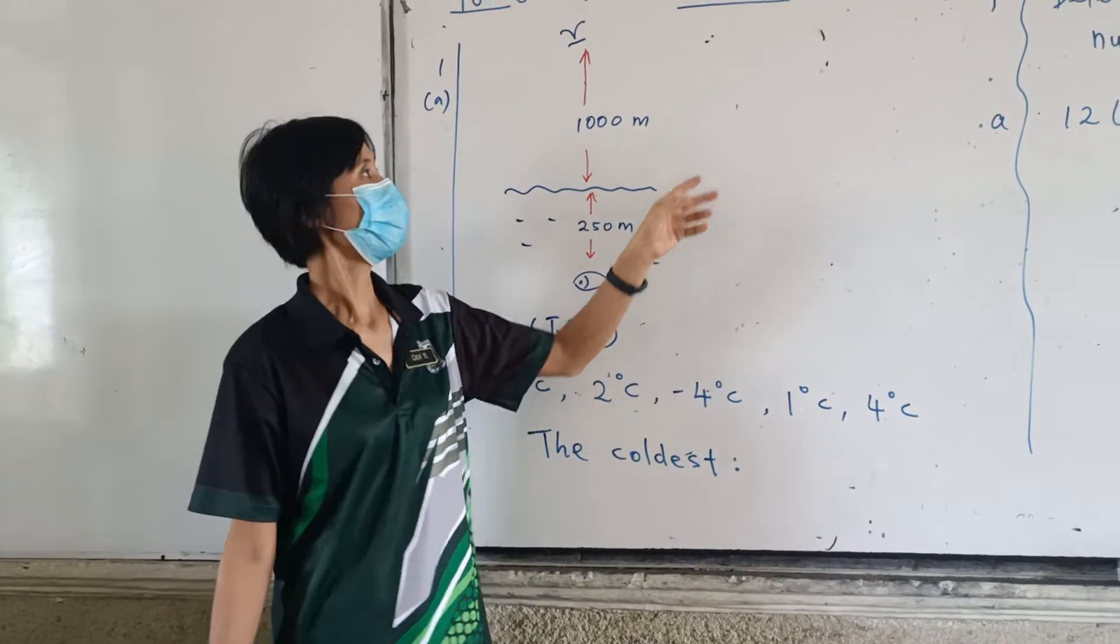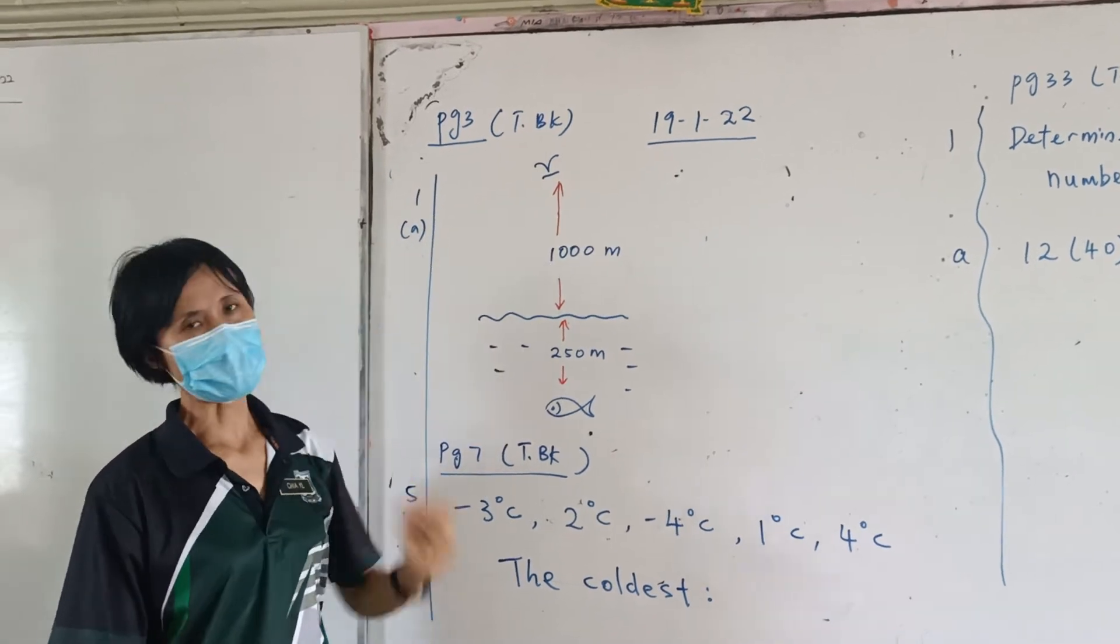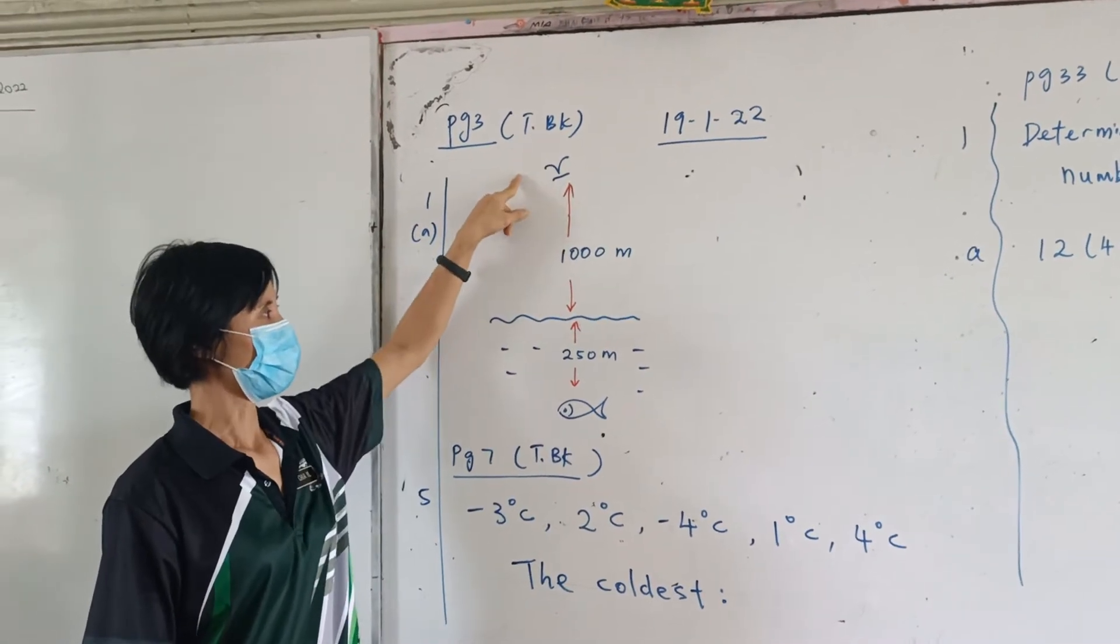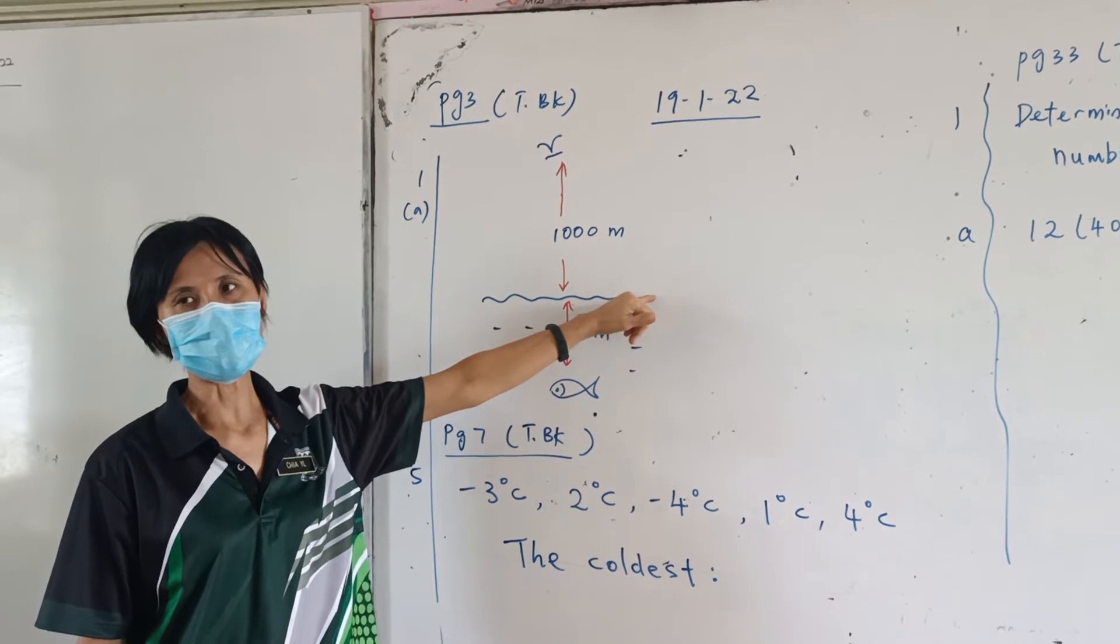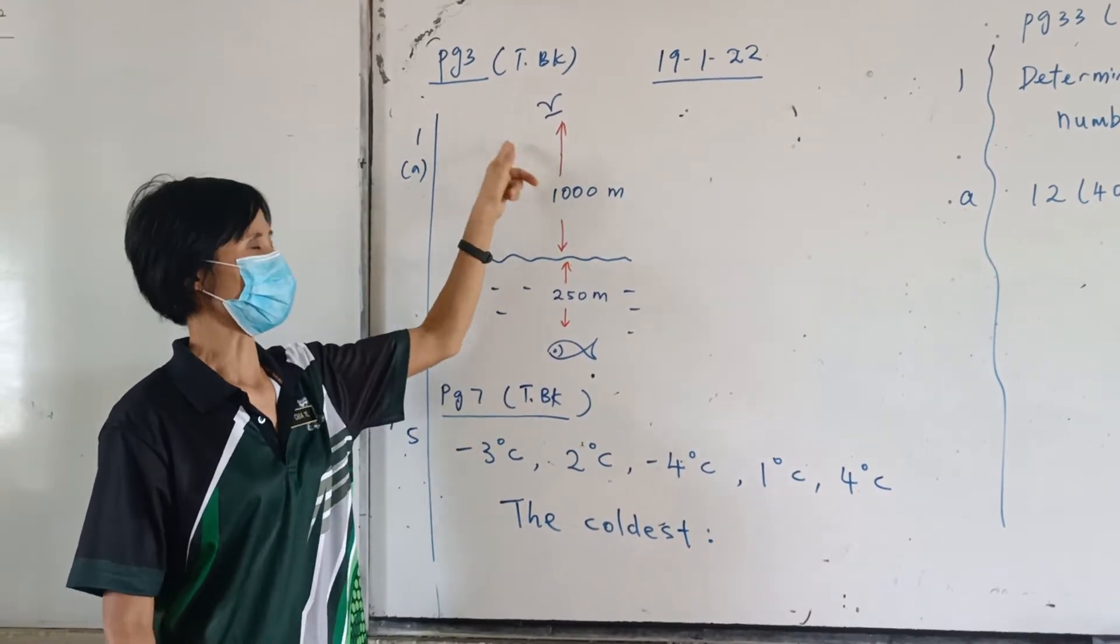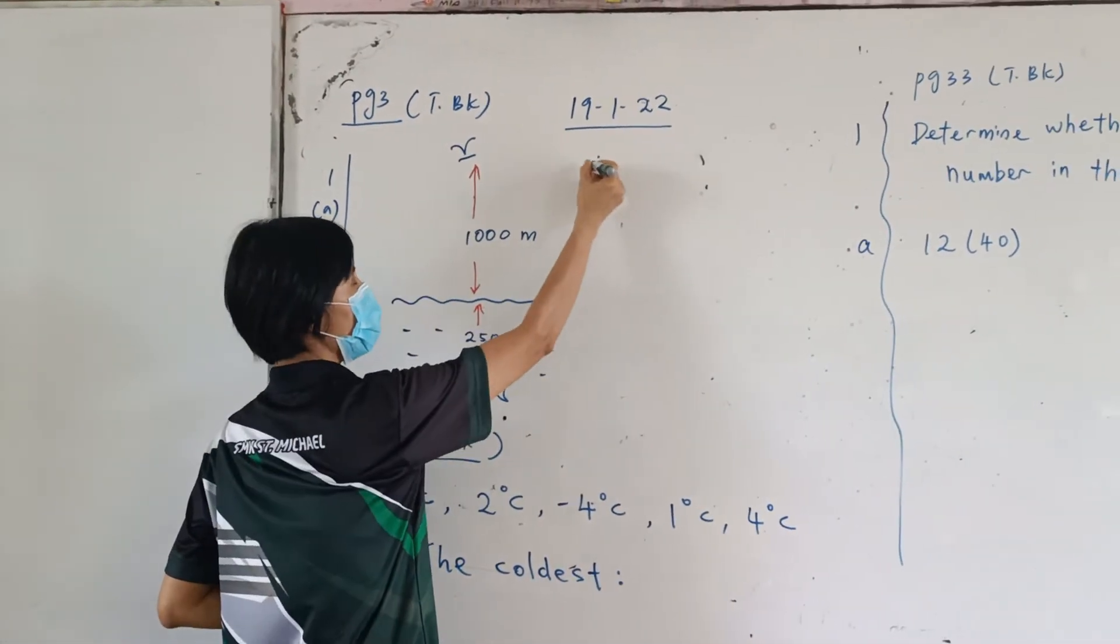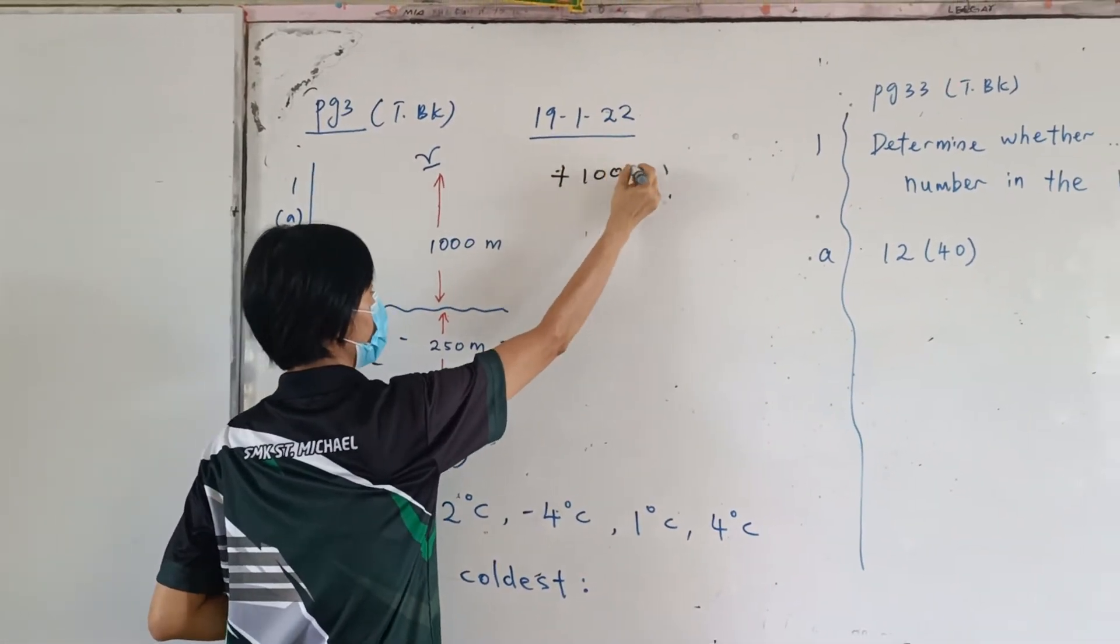So this one, division. H3, desktop, H3. Number one. There's a bird here, 1,000 meters above sea level and a fish below sea level. So what is the position of the bird? Tell me, positive or negative? Positive.